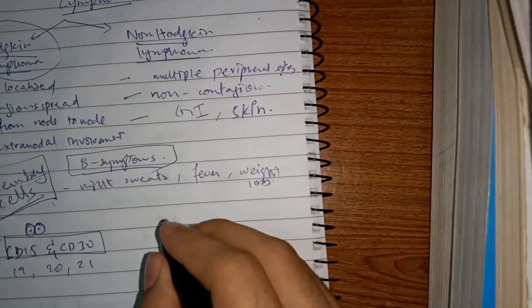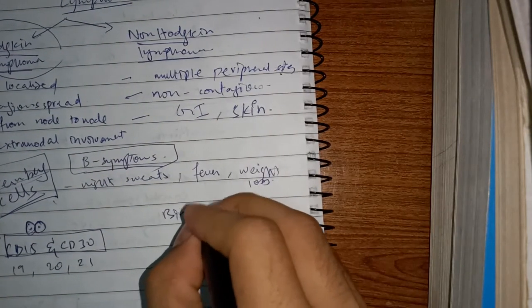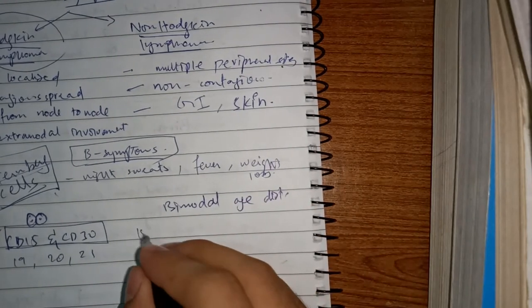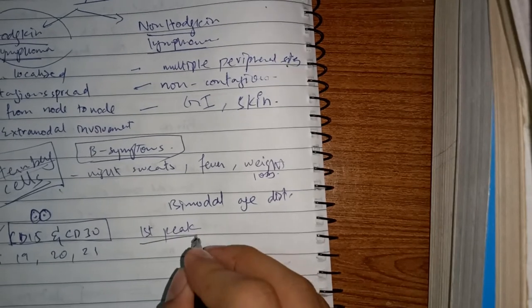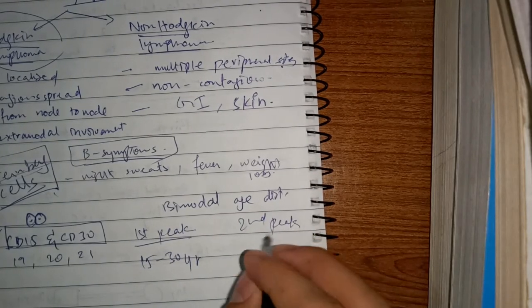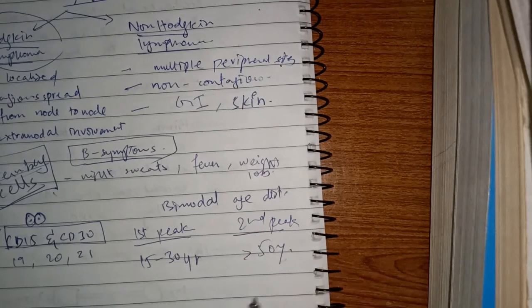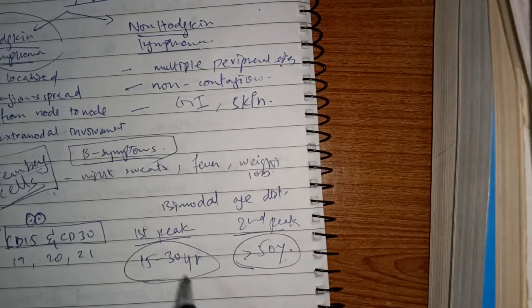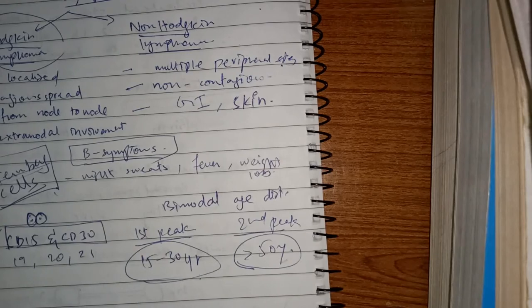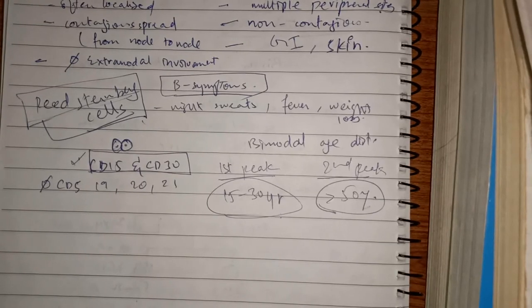Hodgkin lymphoma has a bimodal age distribution: the first peak is between 15 to 30 years, and the second peak is greater than 50 years. Both age groups are at higher risk for developing Hodgkin lymphoma.